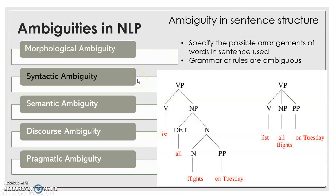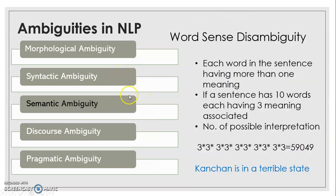Handling this ambiguity and finding the correct grammar is a challenge at the syntactic level. The next ambiguity is semantic ambiguity, which deals with word sense disambiguity, meaning each word in a sentence can have more than one meaning.